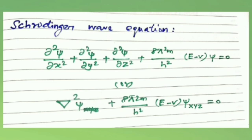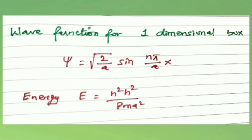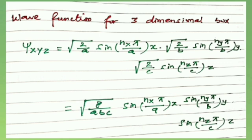Inside the box the potential is zero and outside it is infinity, similar to the one-dimensional box. We know the wave function for a one-dimensional box is ψ = √(2/a) sin(nπx/a), and the energy is E = n²h²/8ma². Similar expressions apply for the three-dimensional box.